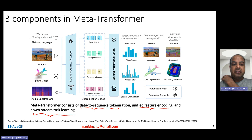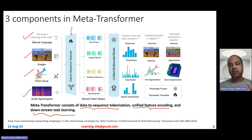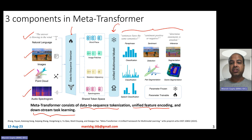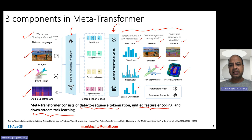As shown in the diagram, the model can take text, images, audio, and point clouds. The first layer is the data-to-sequence tokenizer, which produces a sequence of embeddings. Then there is a unified multimodal encoder that encodes information from these different modalities. Finally, task-specific heads handle tasks like paraphrasing, sentiment analysis, inference, image classification, object detection, image segmentation, point cloud classification, part segmentation, scene segmentation, and speech classification.